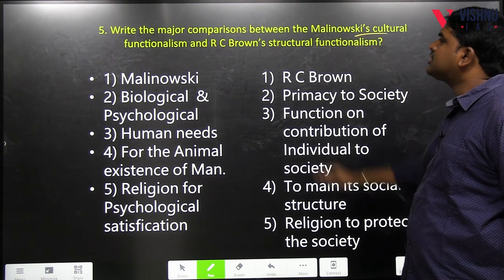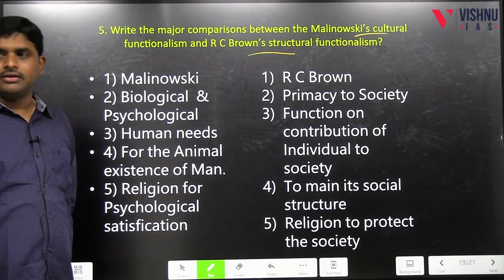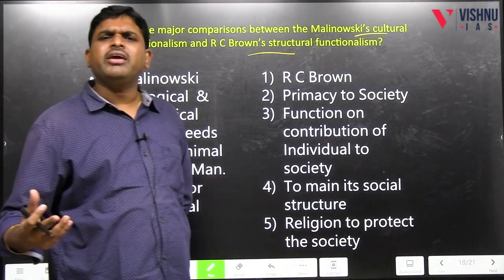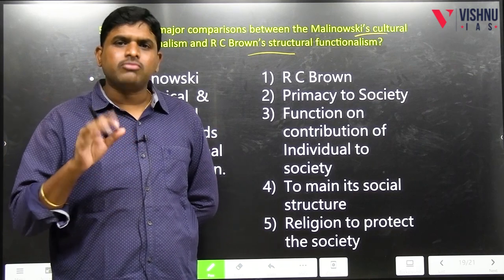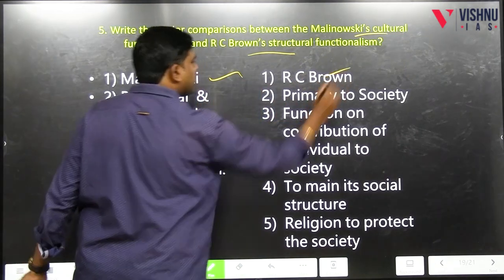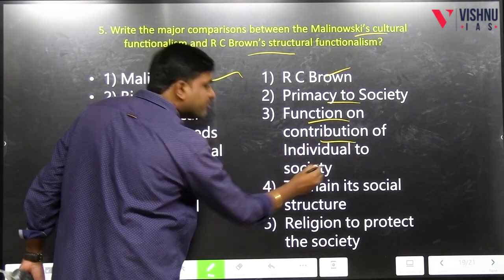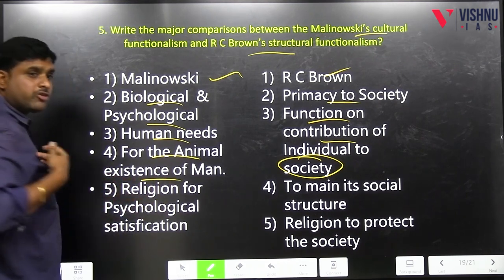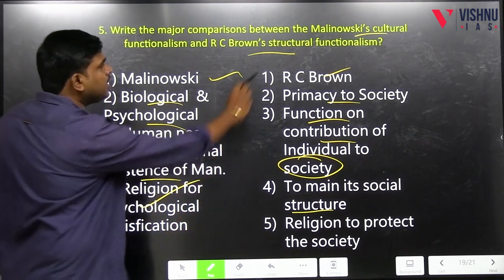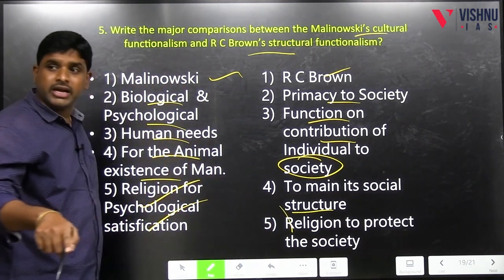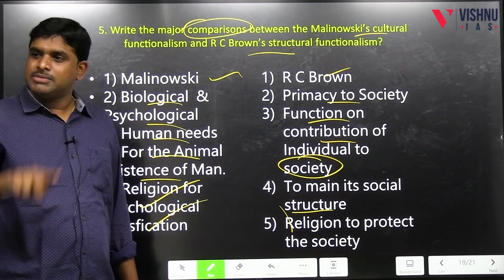Write the major comparisons between Malinowski's culture functionalism and R.C. Brown's structural functionalism. Answer writing is simplifying the evaluator's work — there is no one best way of writing an answer; it is a myth. The best way is making the evaluator's job simple. Malinowski vs R.C. Brown: biological and psychological needs versus primacy to society; human needs are important versus societal needs are important. Function on contribution of individual to society versus animal existence of man. Religion for psychological satisfaction versus religion to protect and maintain society. Comparison means both differences and similarities. Both advocated fieldwork; both are emic views; both take a synchronic approach, not diachronic.